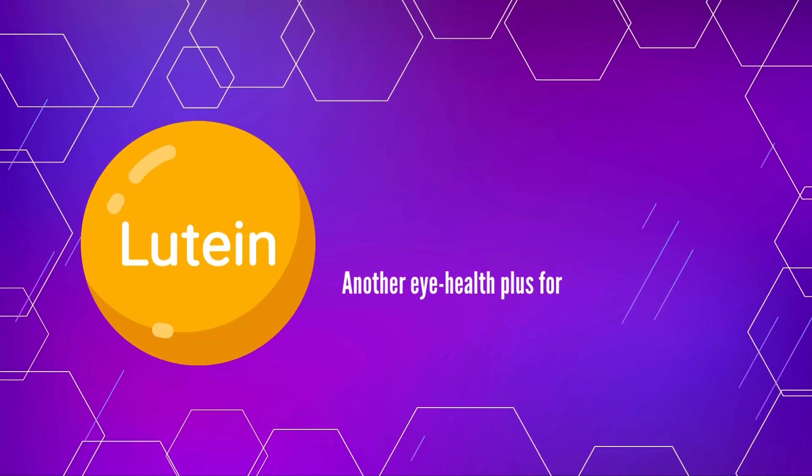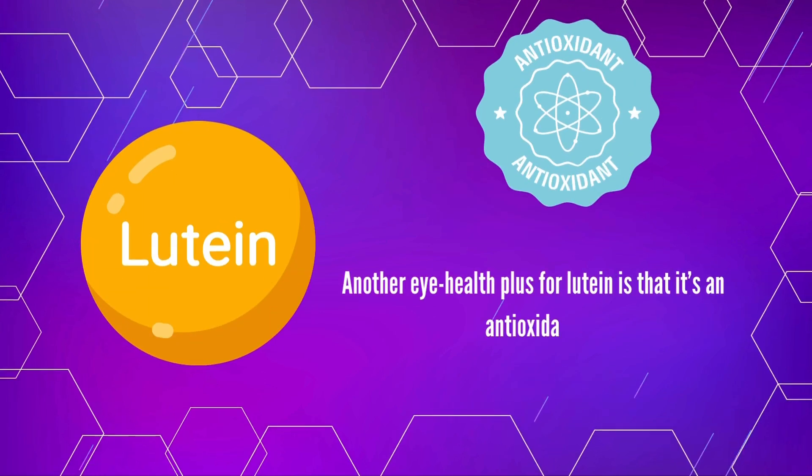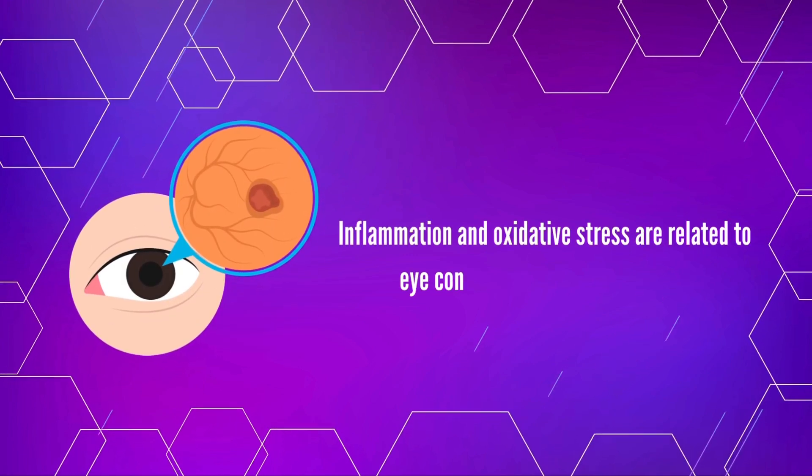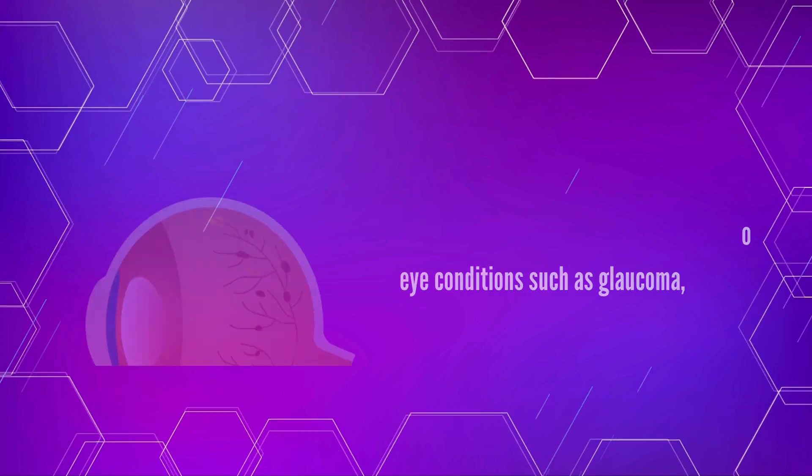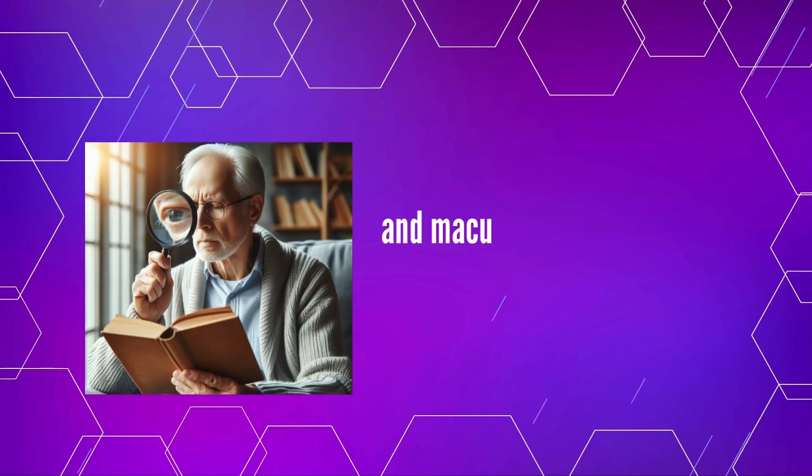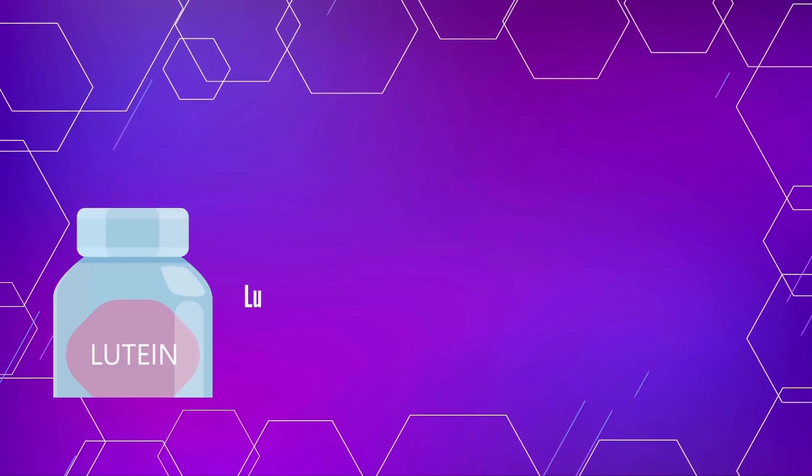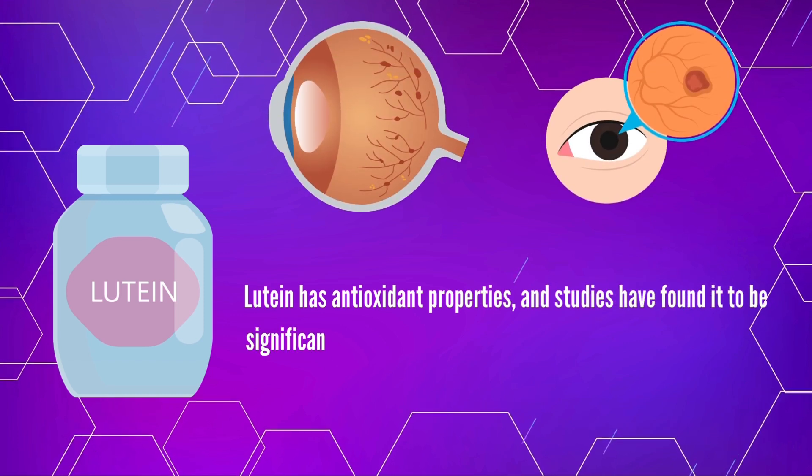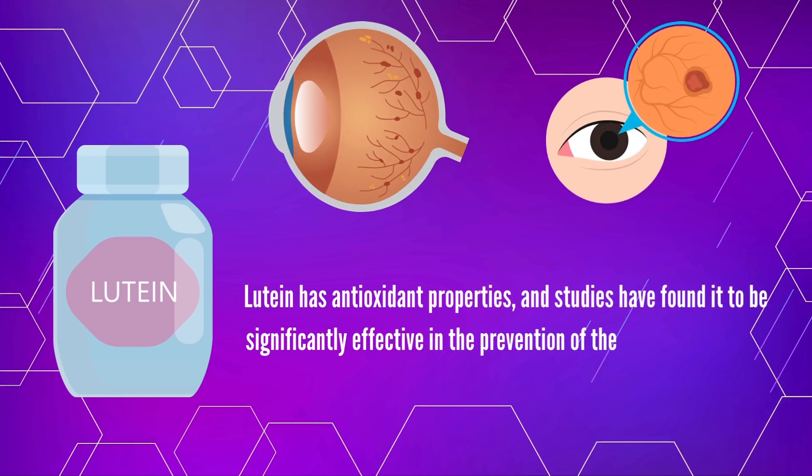Another eye health plus for lutein is that it's an antioxidant. Inflammation and oxidative stress are related to eye conditions such as glaucoma, diabetic retinopathy, and macular degeneration. Lutein has antioxidant properties and studies have found it to be significantly effective in the prevention of these eye conditions.